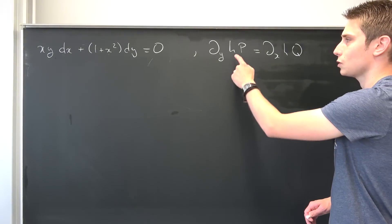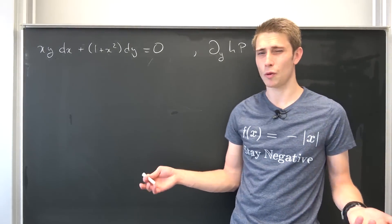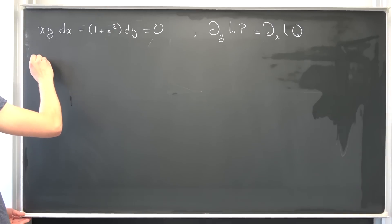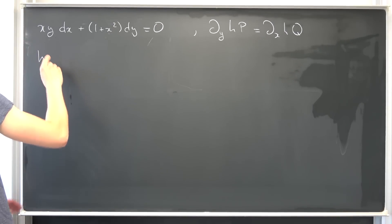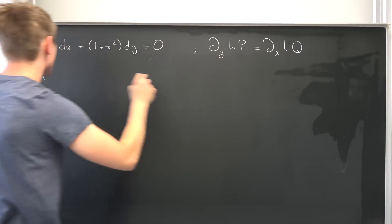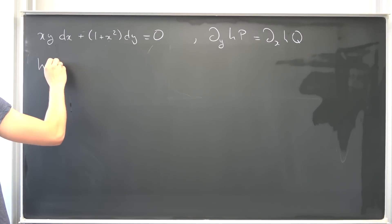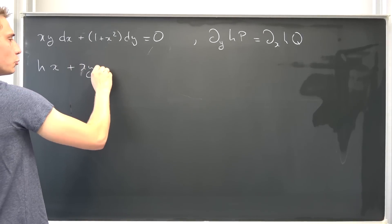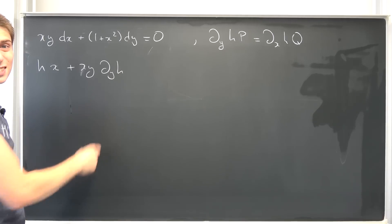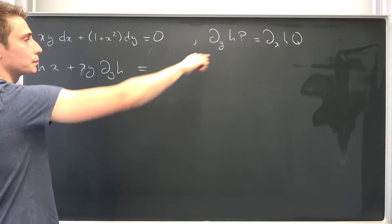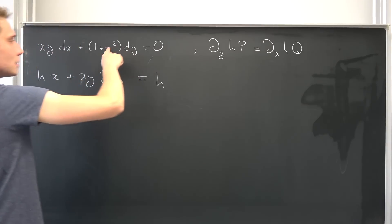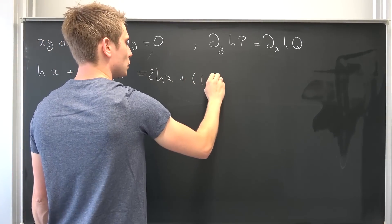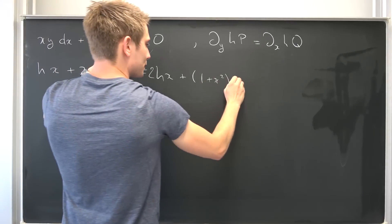But now we want to treat h as just a multivariable function we don't know anything about. So let's write this out. Using the simple product rule: h times del_y of p — del_y of p is just this function differentiated with respect to y, giving us x — plus p, which is x times y, times del_y of h, equals h times del_x of q, which is 2x, plus q, so 1 plus x squared, times del_x of h.